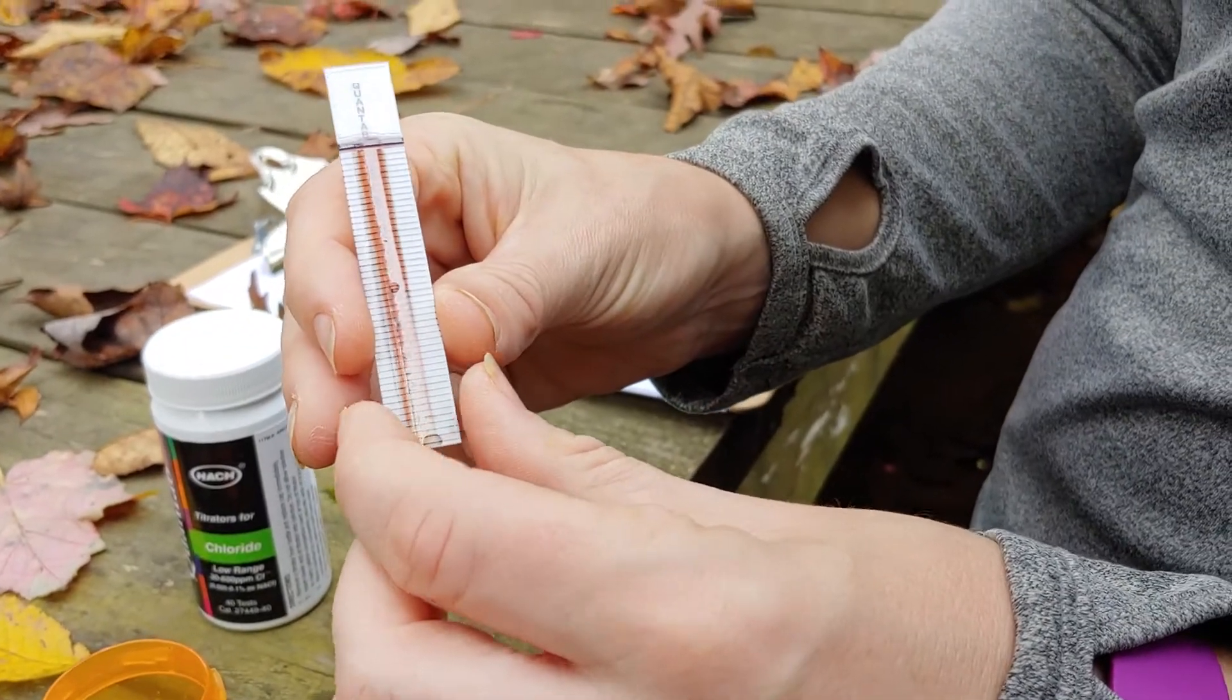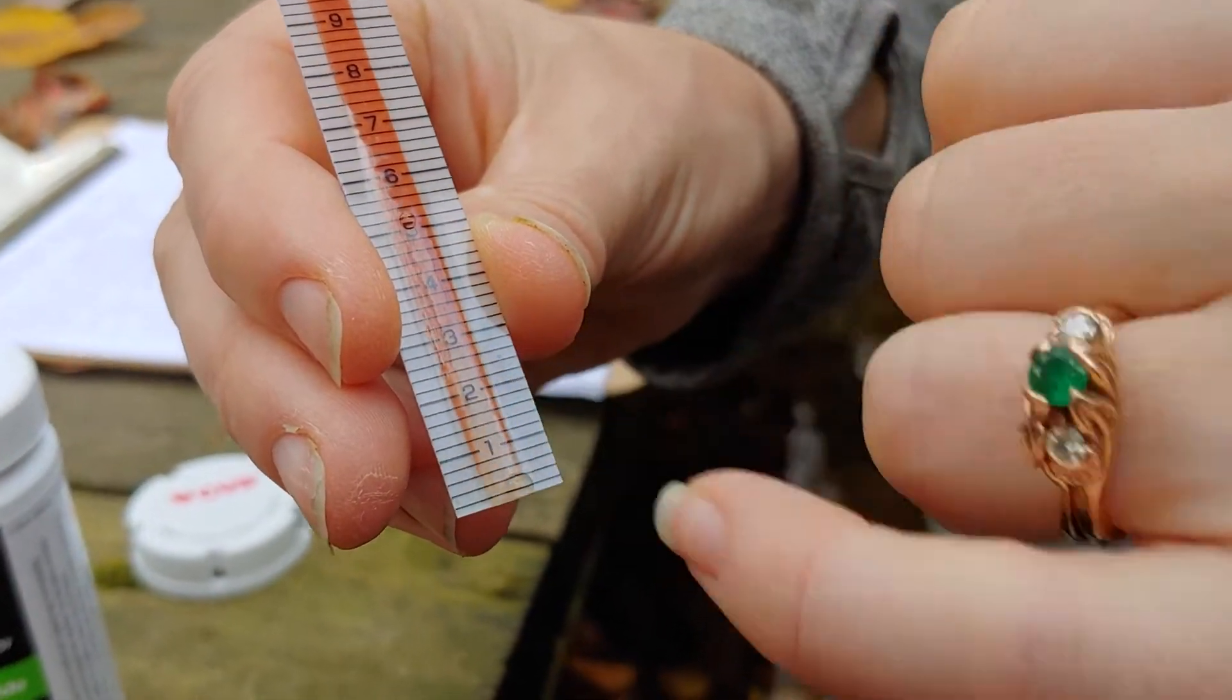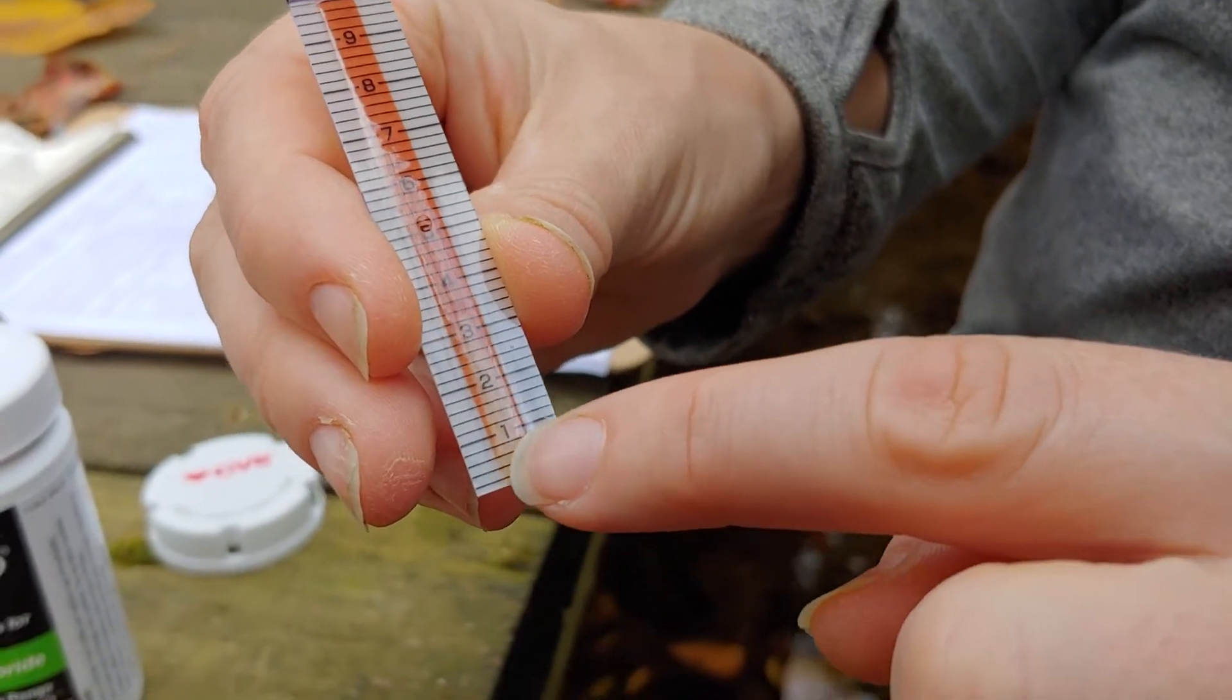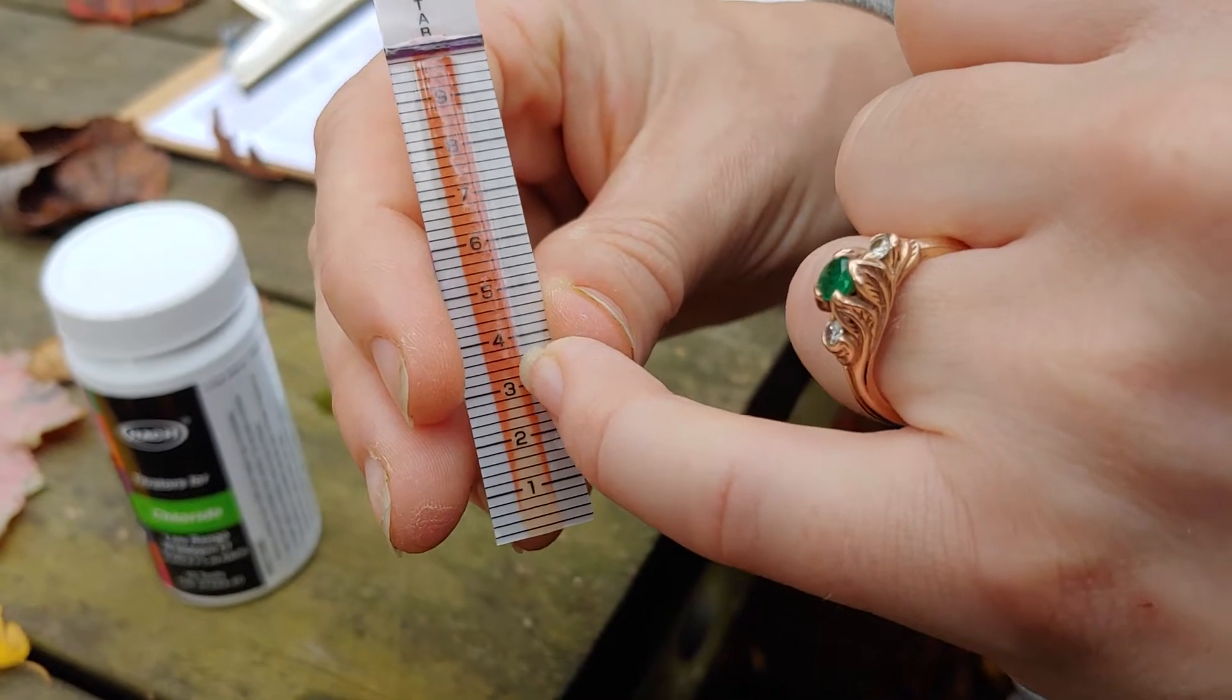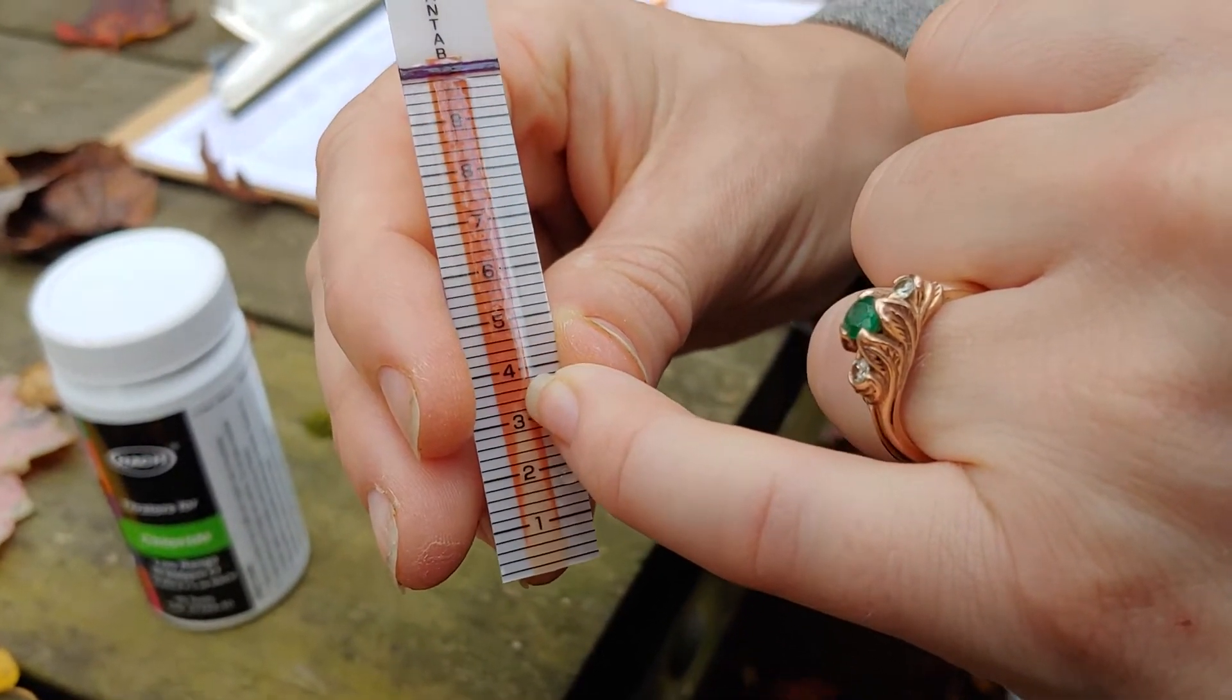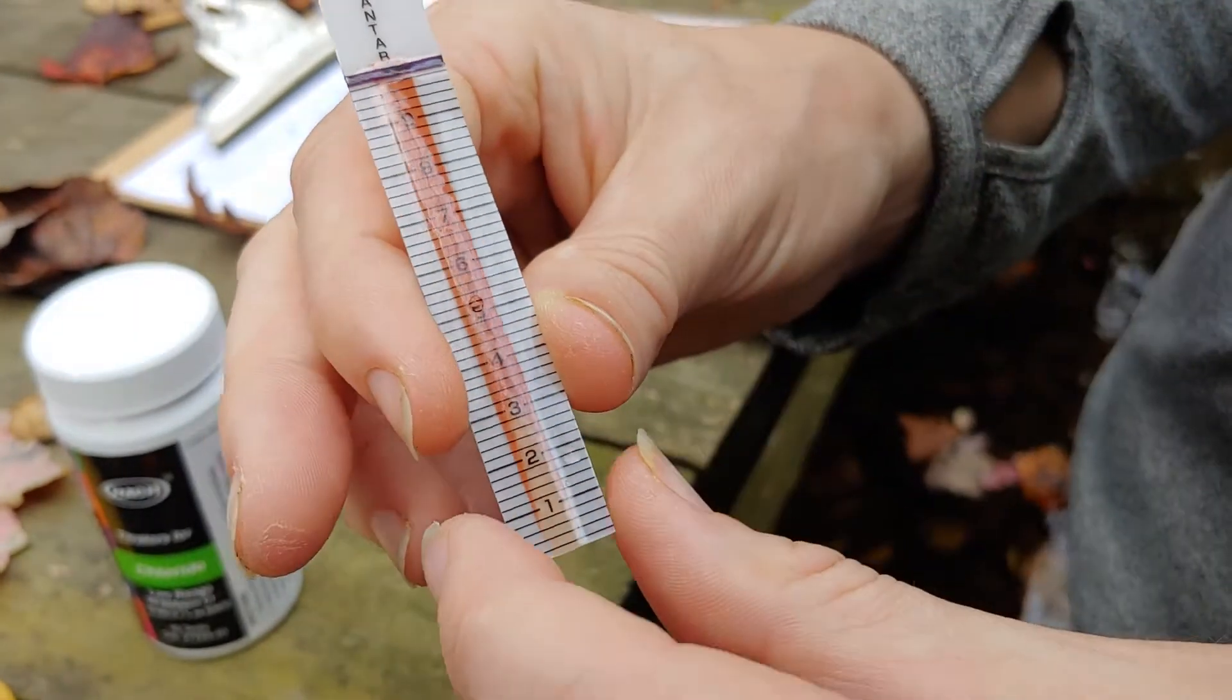So now it might be a little hard to see, but the bottom has changed colors. So there's this nice light yellow triangle coming up, and where that point ends is what our reading is going to be. So it looks like it's ending right about at 3.2.